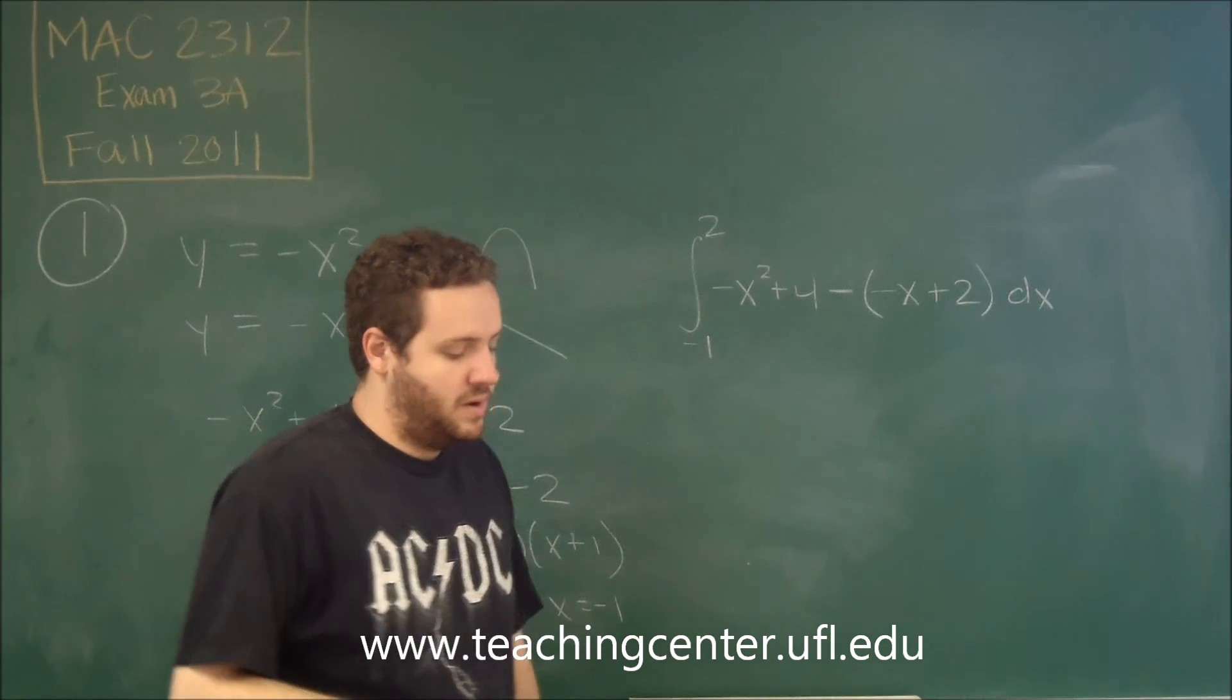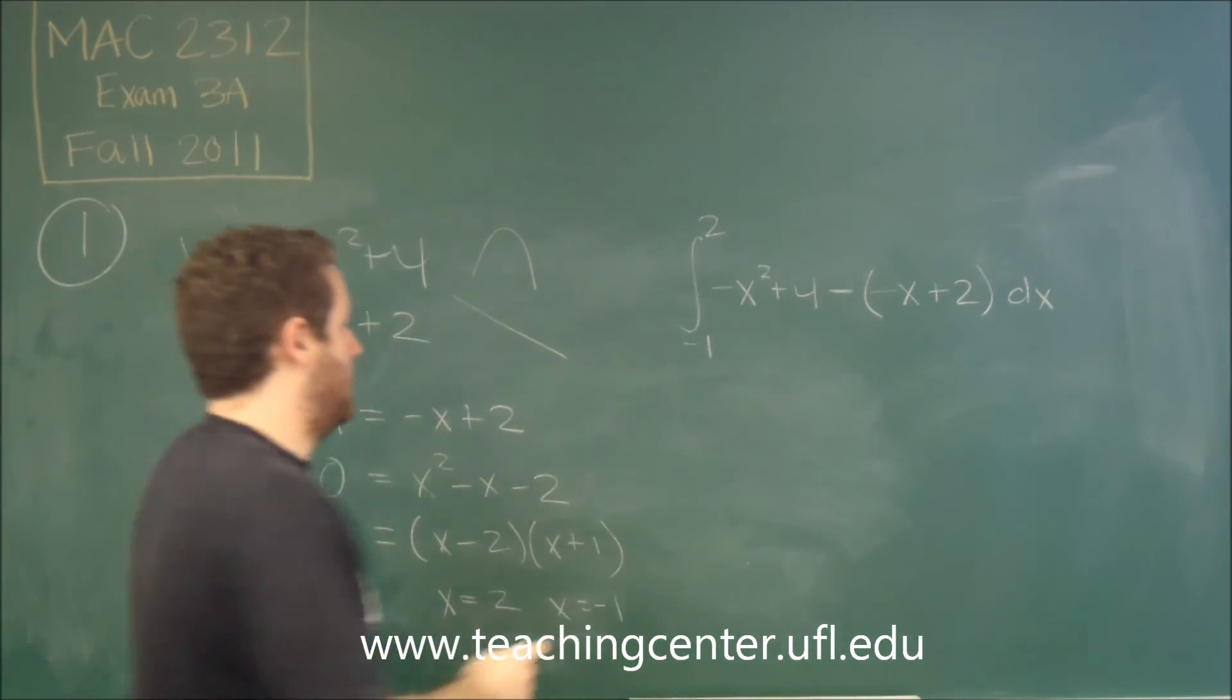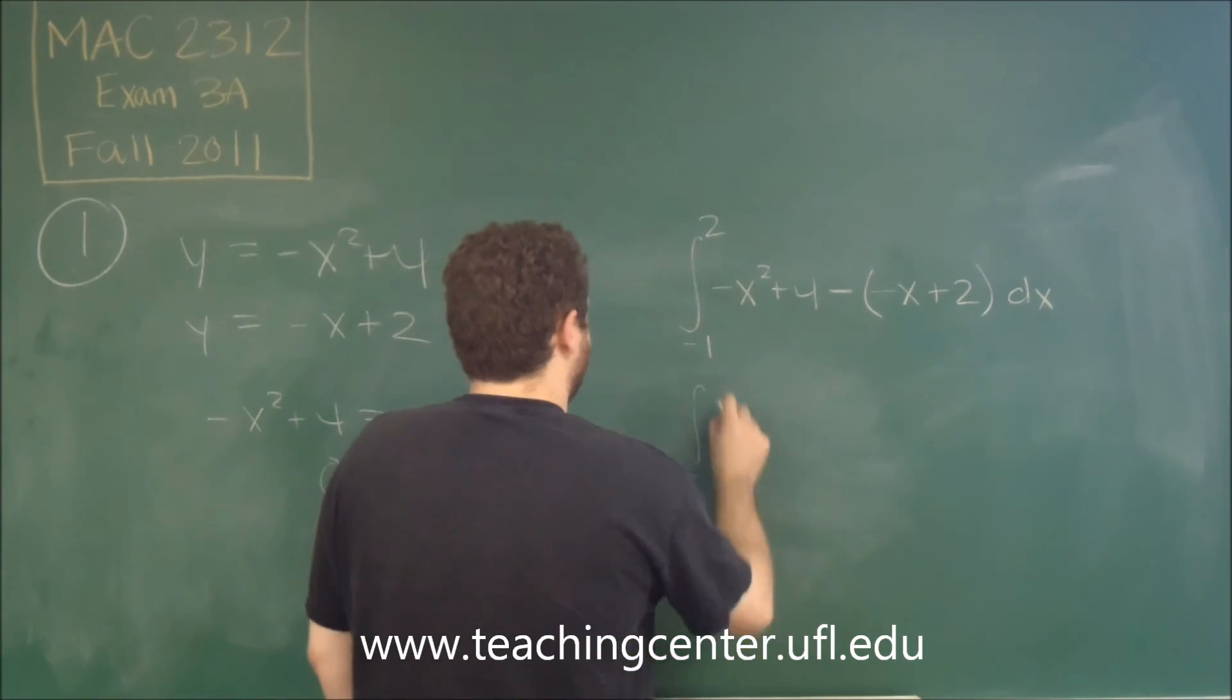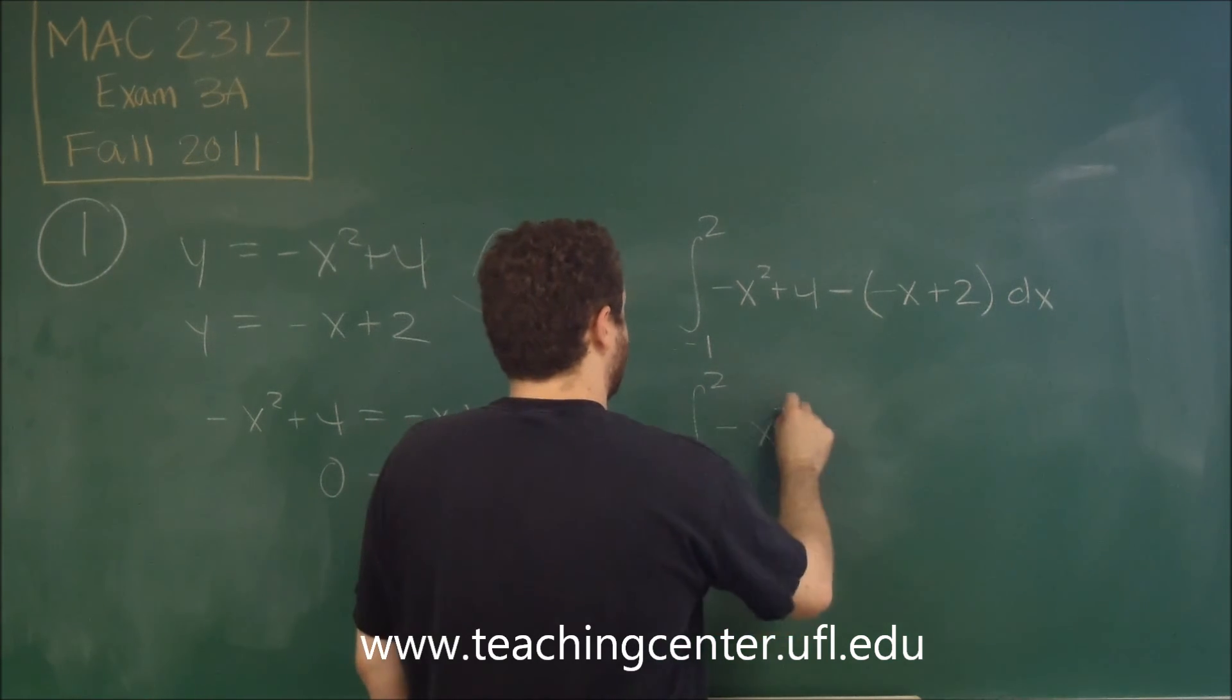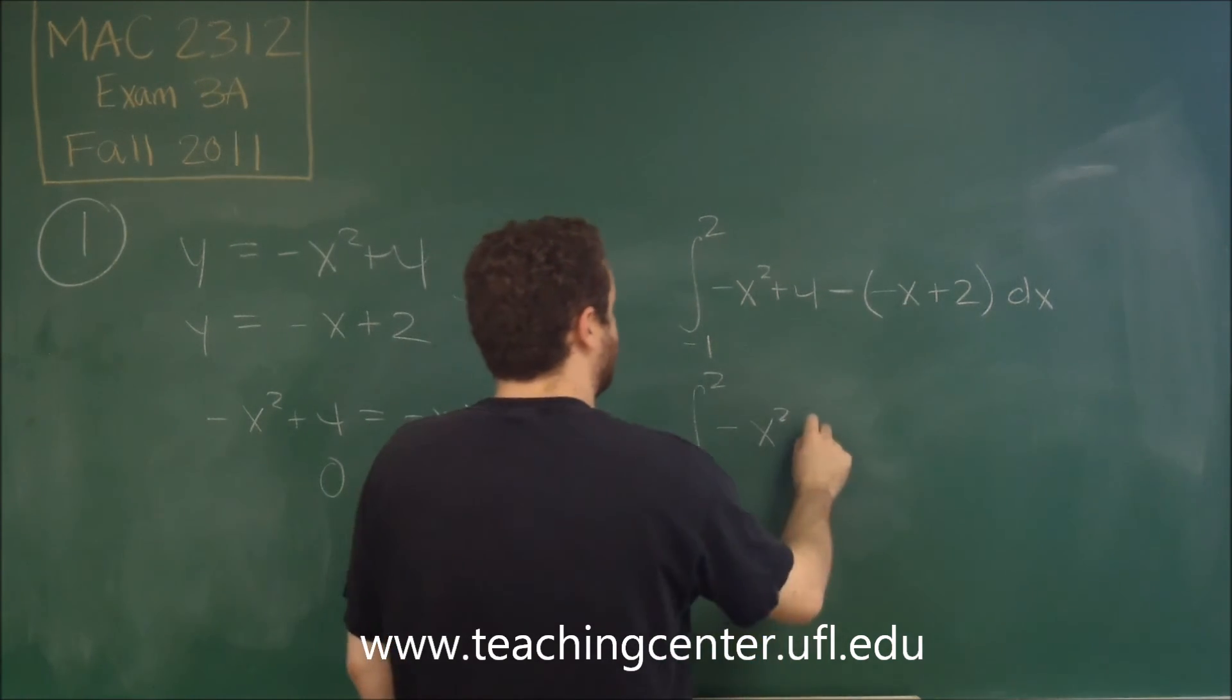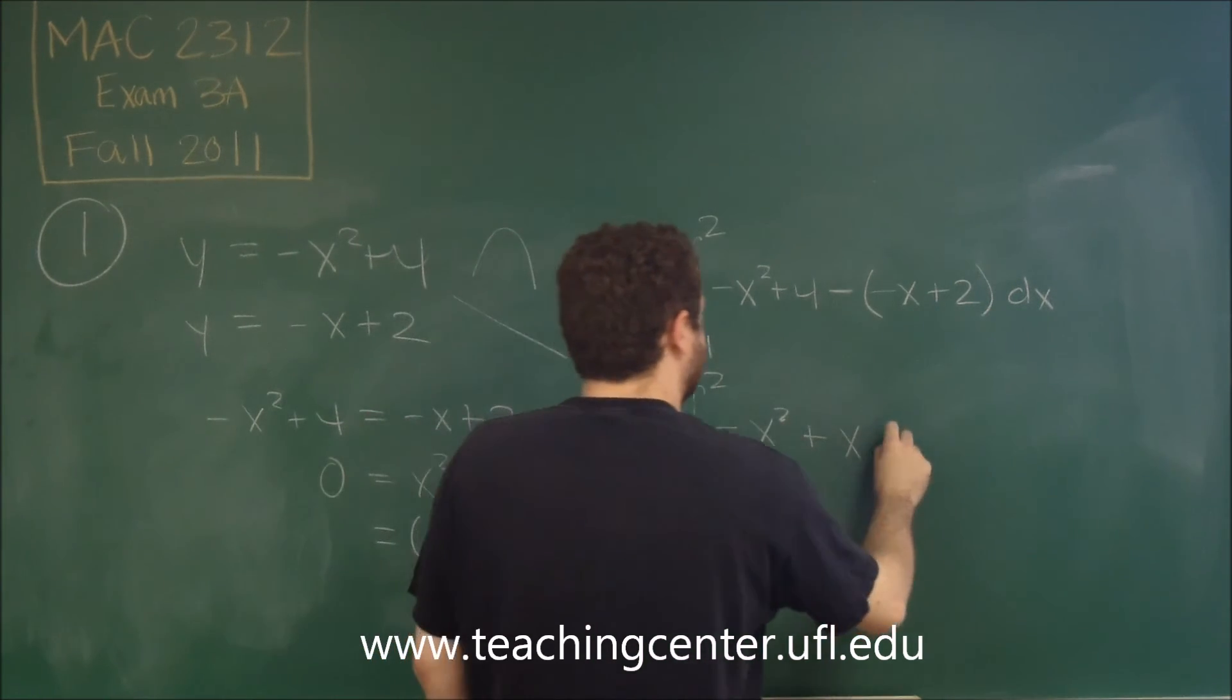And you're not supposed to figure out this integral, you're supposed to just state it. But we can simplify this a little bit. If we distribute this negative in combined-like terms, we see that we get the following: negative x squared, this would become plus x, and we have plus four minus two, so we get plus two.